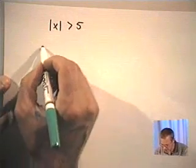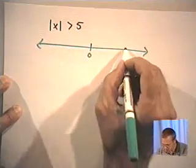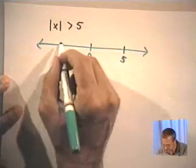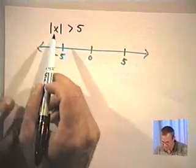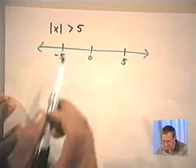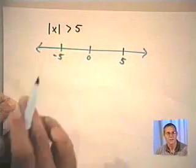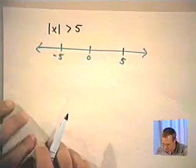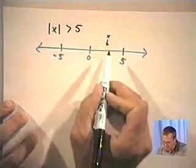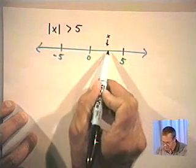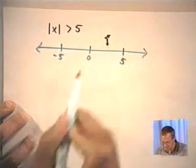It might be illustrated a little better on a number line. There's my 0. Let's go ahead and put 5 here. The absolute value of x being greater than 5 means that x must be more than 5 units away from 0. Could x be a number somewhere in here? Well, if x was in this interval, it would certainly be less than 5 units away from 0. So x could not be there.